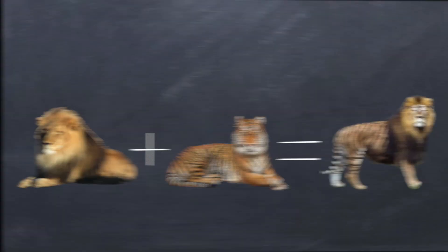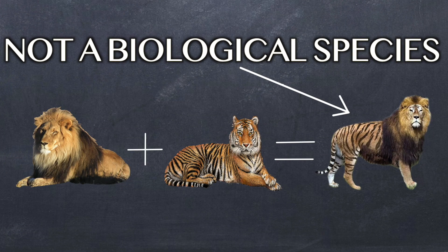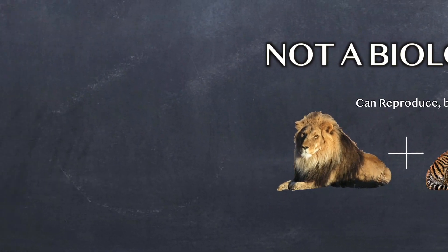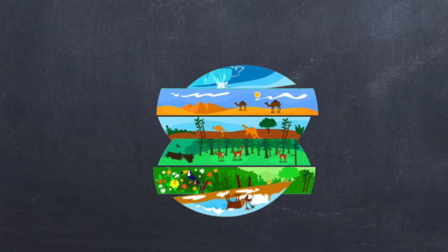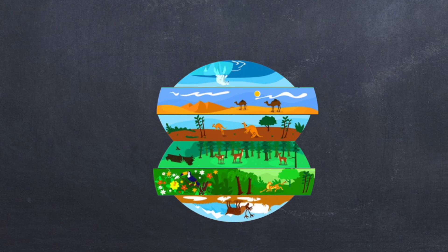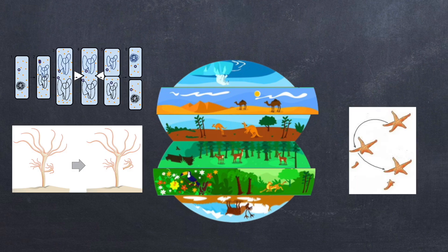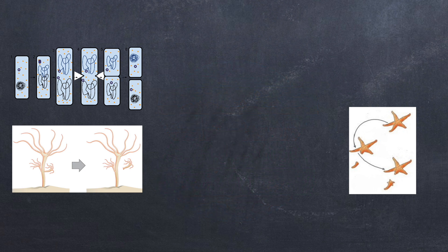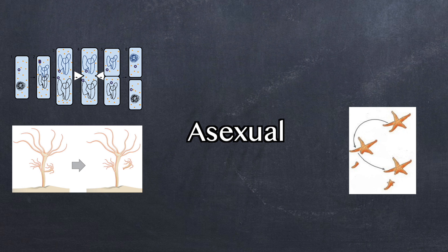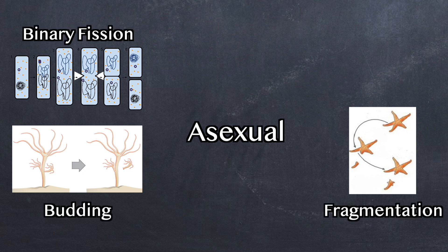Calling two organisms a species just because they can reproduce with each other doesn't always work. The natural world is incredibly diverse and constantly changing. Also, there are various modes of reproduction, and the biological species concept only applies to sexual organisms. But not all creatures have sex — we're one of the lucky ones. Some organisms are asexual, reproducing without sex, usually accomplished by means of binary fission, budding, or fragmentation.